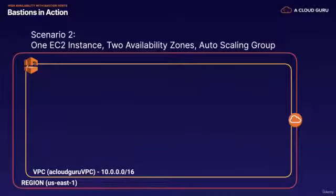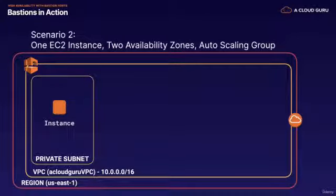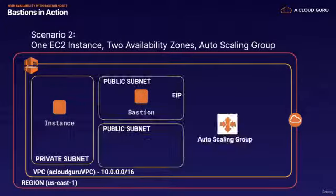If you wanted a cheaper option, you might just do this in a test and dev environment. We've got our EC2 instances in our private subnet, then we have a public subnet with a Bastion that sits inside a public subnet and it has an elastic IP address.